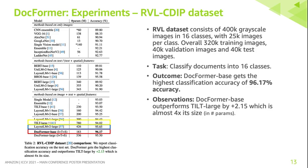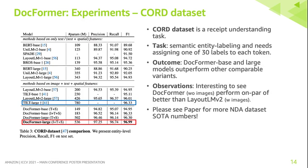We next look at Docformer's performance on the RVLCDIP classification dataset. Docformer base in red beats all other base and large prior art models, some of which are four times as big as Docformer base, and it does this by large margins. We also look at the RISC dataset, where Docformer base and large variants again beat prior art. Please see the paper for more state-of-the-art performance on other datasets.